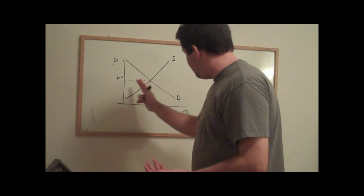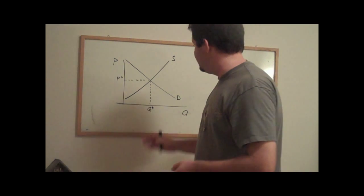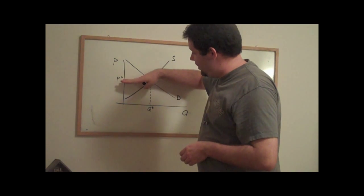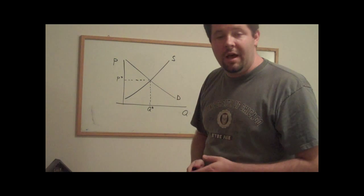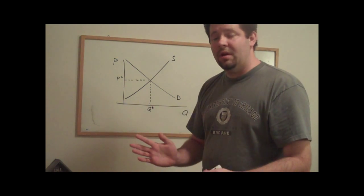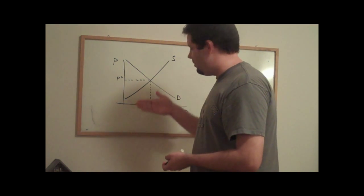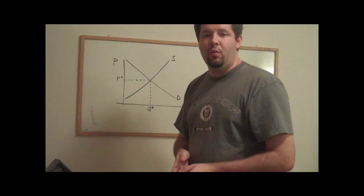If we look above the equilibrium price up to the demand curve, that gives us our consumer surplus. Below this price to the supply curve will give us our producer surplus. When the government comes in and puts one of these price restrictions, that can interfere with what trades will occur.